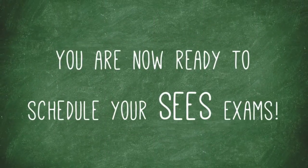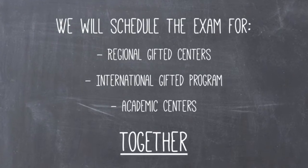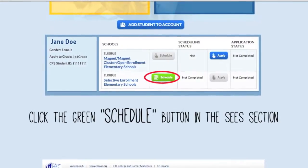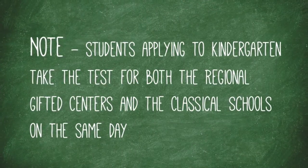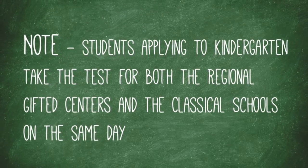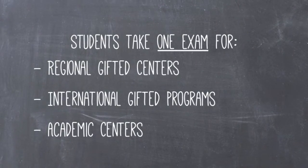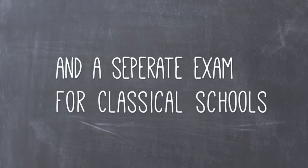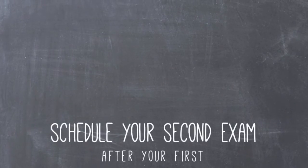You can now begin scheduling your SEAS exam. We will schedule the exam for the Regional Gifted Centers, International Gifted Program, and Academic Centers together. Note that students applying to Kindergarten would take the test for both the Regional Gifted Centers and the Classical Schools, and they will take the test on the same day. Students applying to Regional Gifted Centers, International Gifted Programs, and Academic Centers will take one exam for these programs, and they will take a separate exam on a separate day if they are applying to Classical Schools. You will schedule your second exam after you schedule your first.